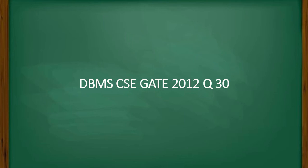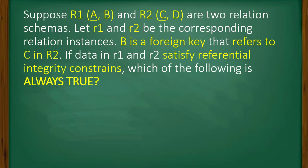Here is a DBMS question from GATE 2012. Suppose R1 with attributes A, B and R2 with attributes C, D are two relation schemas. Let r1 and r2 be the corresponding relation instances. B is a foreign key.